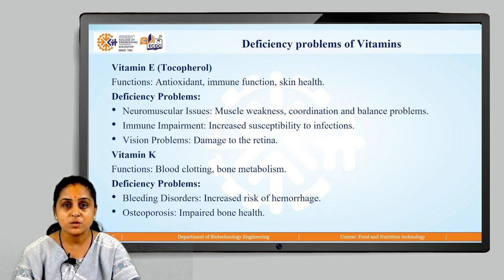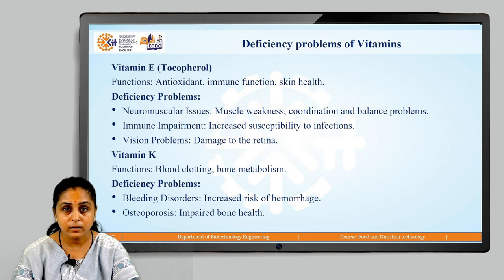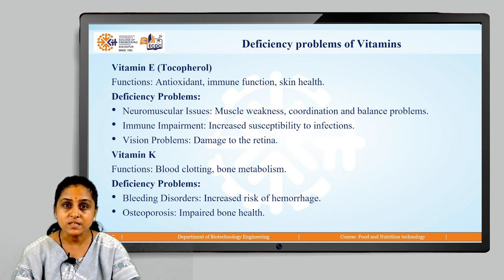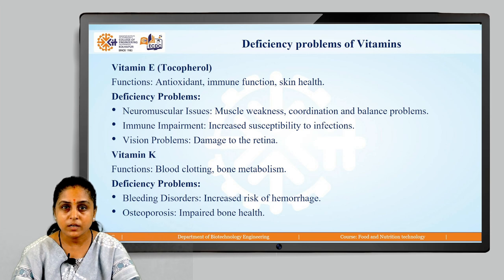Moving on to the next vitamin, which is vitamin E, also known as tocopherol. The functions in which vitamin E is involved include acting as an antioxidant, involvement in immune functioning of the body, and maintaining skin health. The deficiency problems associated with vitamin E are neuromuscular issues, immune impairment, and vision problems, because deficiency of vitamin E may lead to damage of the retina.